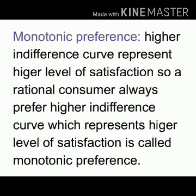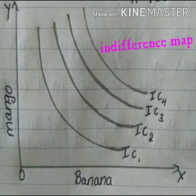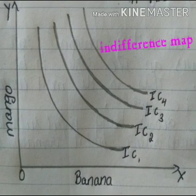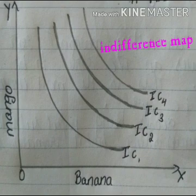This can be explained with the help of a diagram. In the diagram, on the OX axis we are measuring banana and on the OY axis we are measuring mango. Here we have four indifference curves: IC1, IC2, IC3, and IC4. You can observe that each indifference curve is always convex to the origin.